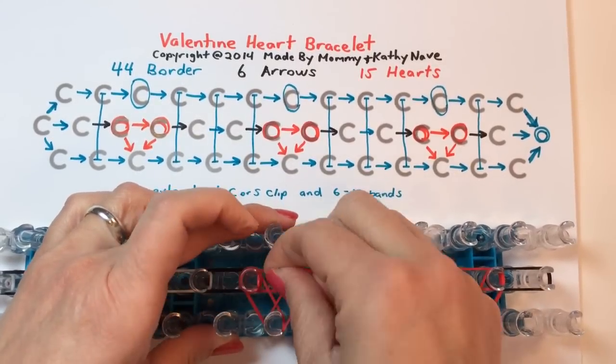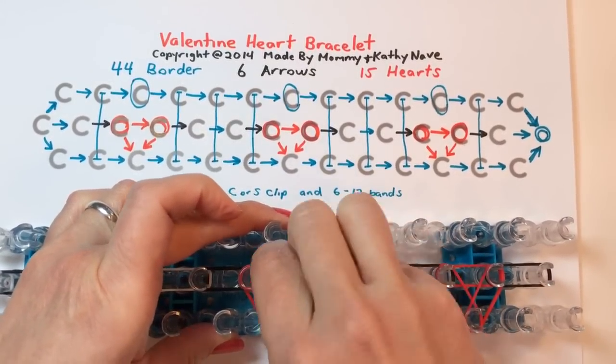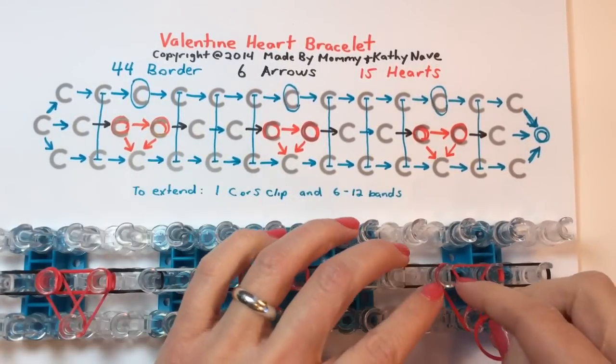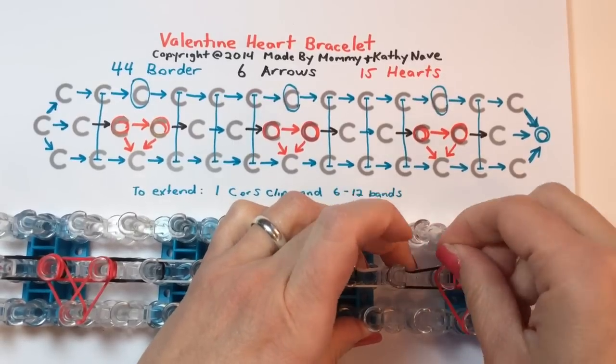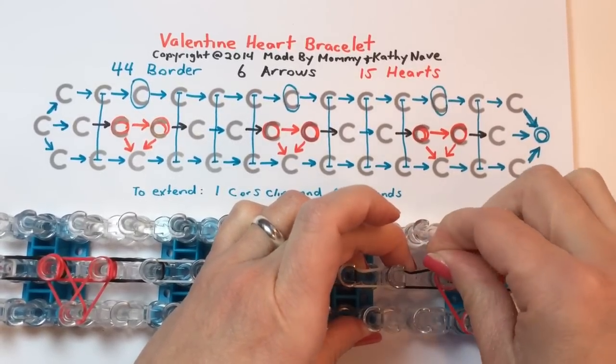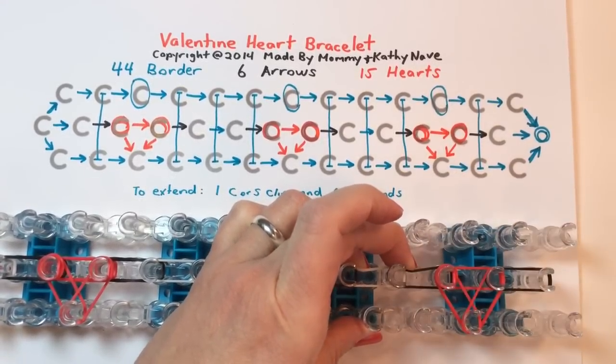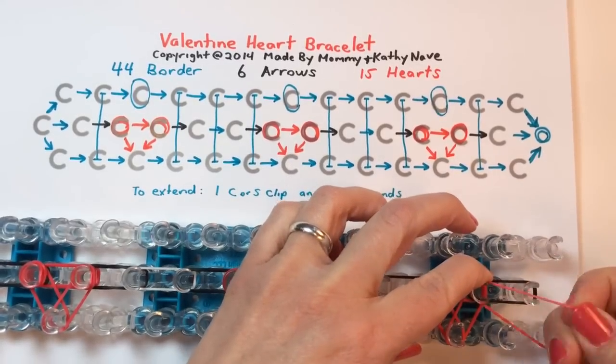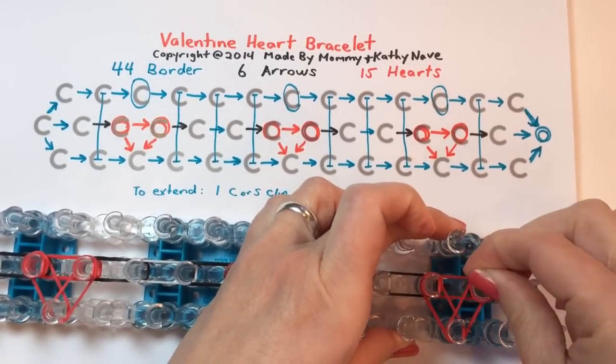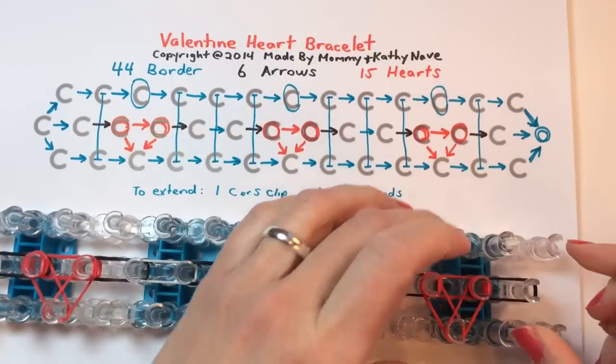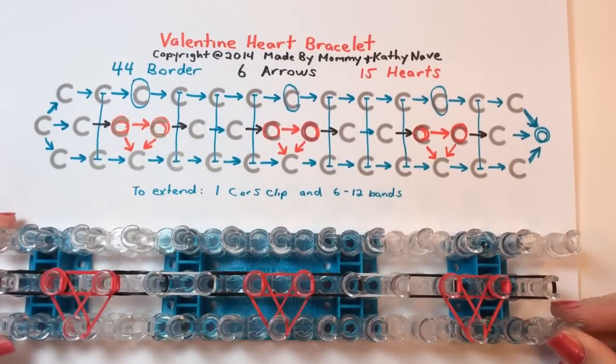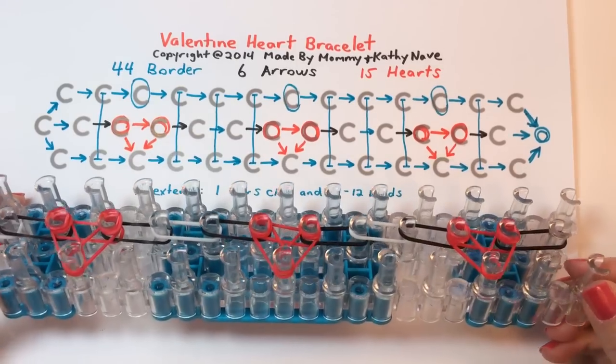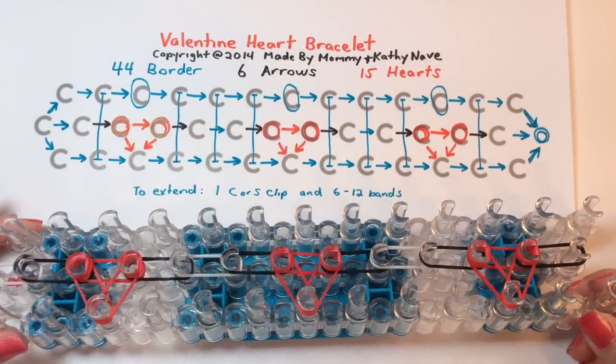Pull, twist, and wrap around. Sometimes I like to think about making sort of a figure eight and folding it over on itself to remember what to do here. There you go. And now you have placed all of the red rubber bands or heart colored rubber bands that you're going to be using for the entire design.